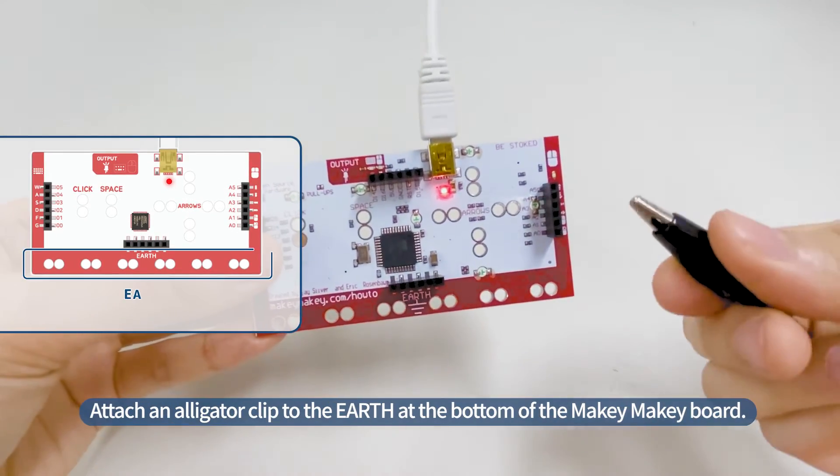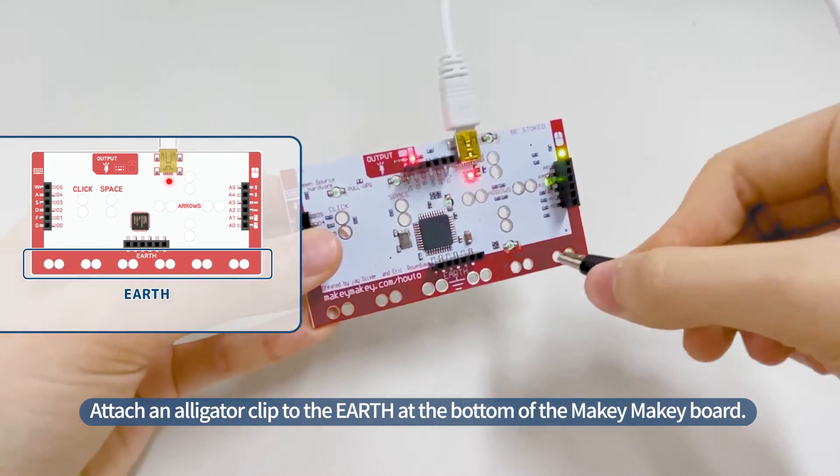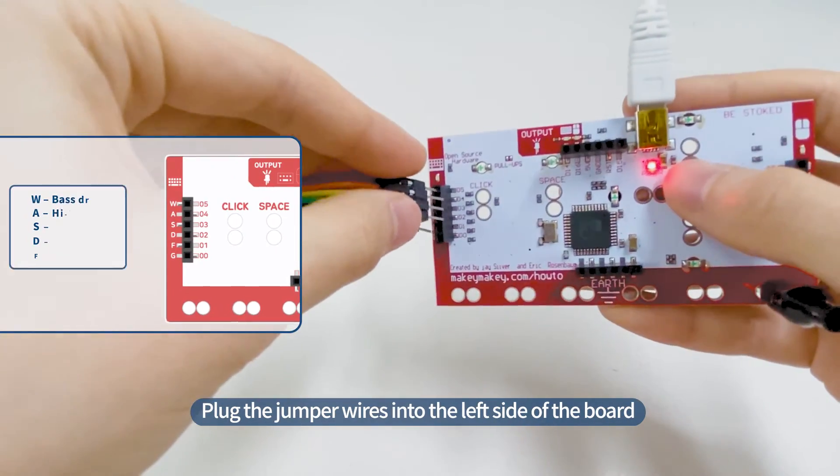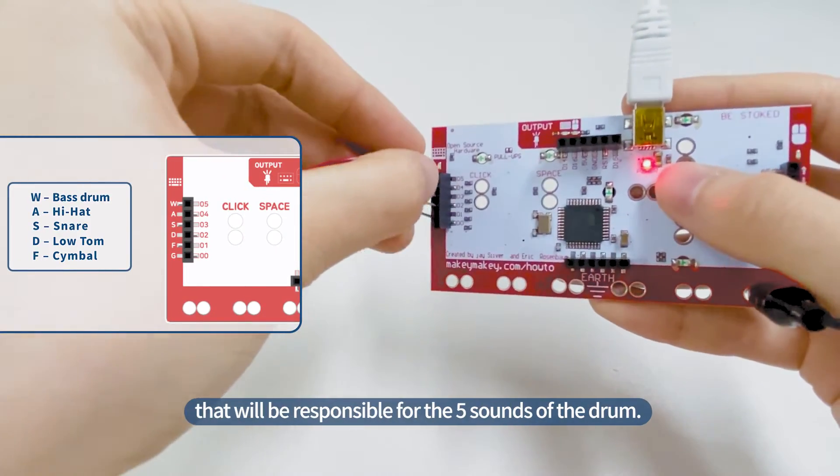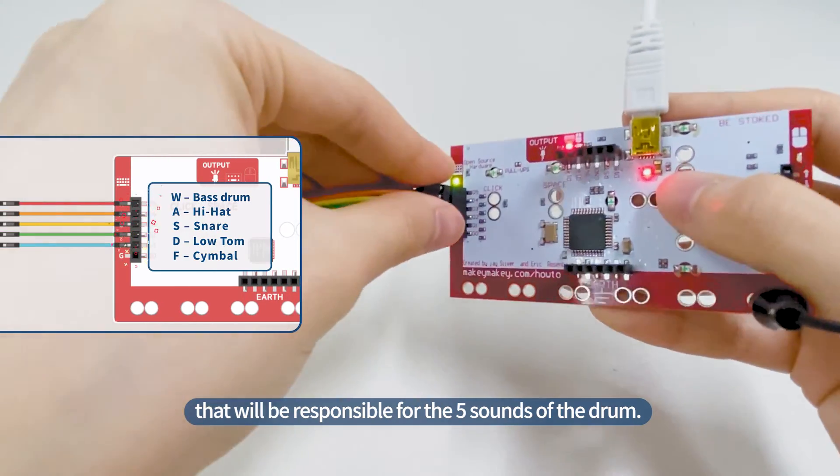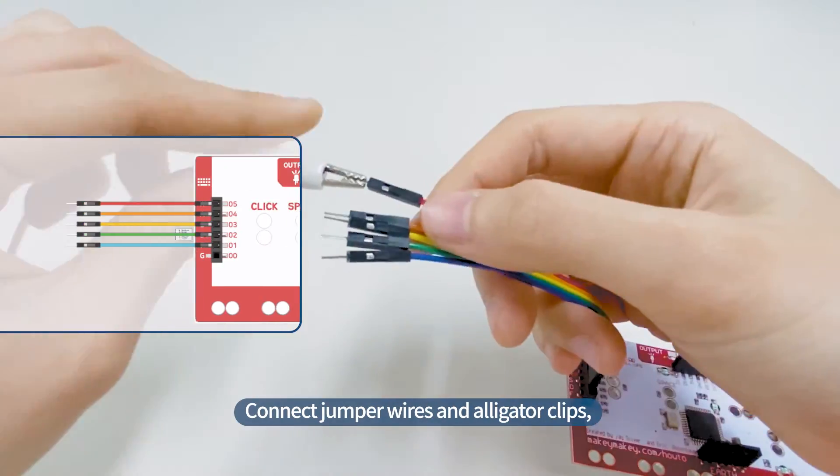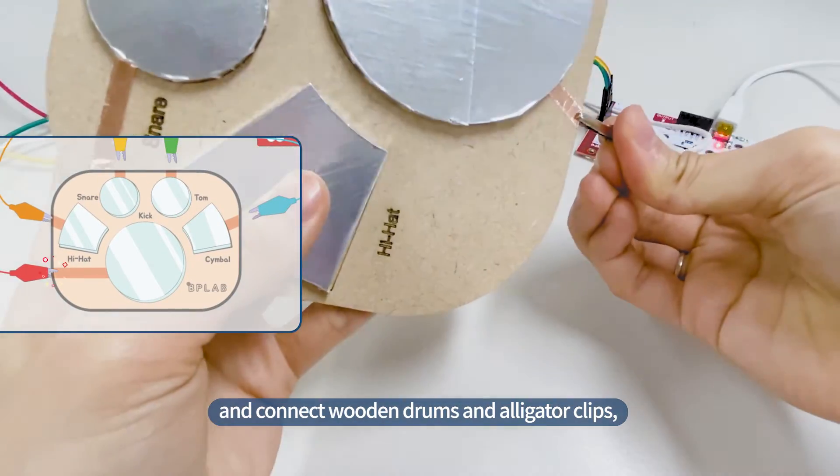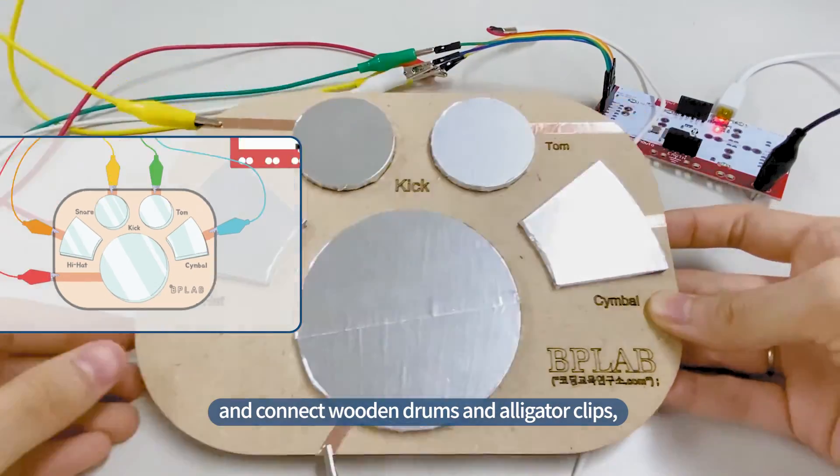Attach an alligator clip to the earth at the bottom of the makey-makey board. Plug the jumper wires into the left side of the board that will be responsible for the five sounds of the drum. Connect jumper wires and alligator clips and connect wooden drums and alligator clips. Electronic drum is complete.